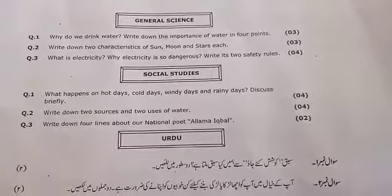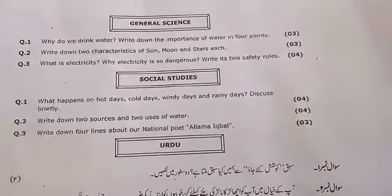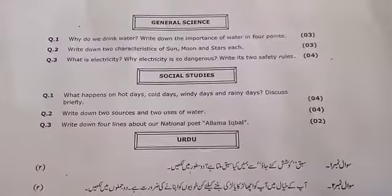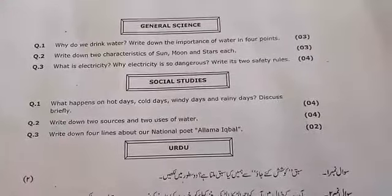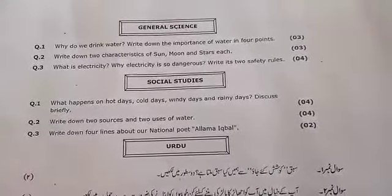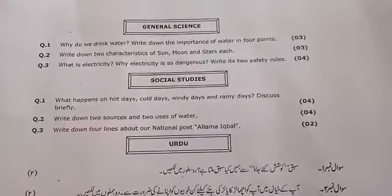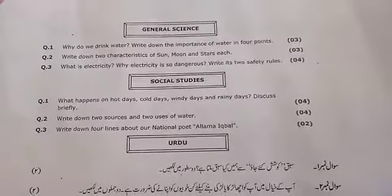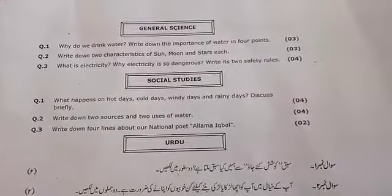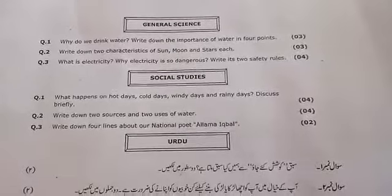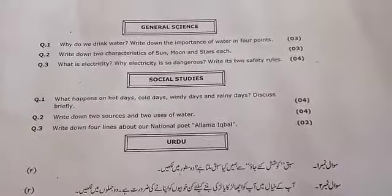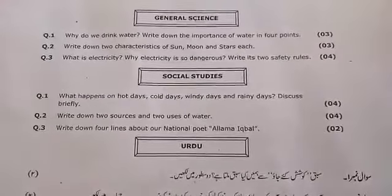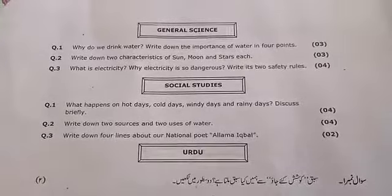Question number 3 is: write down four lines about our national poet Allama Iqbal. We have a short note of 4 lines. From 9 November 1877, Allama Iqbal was born. 21 April 1938, he died. His name was Sir Muhammad Iqbal. He was a poet, philosopher, and politician. He gave the idea of Pakistan. You have to write down on your copy neat and clean, in your own words.